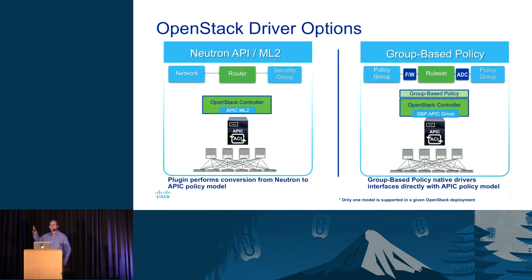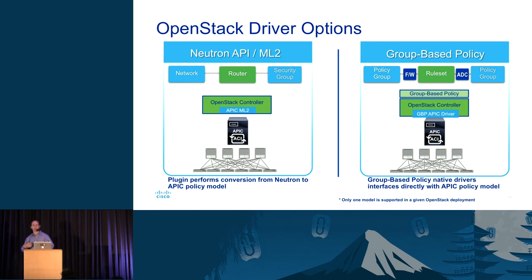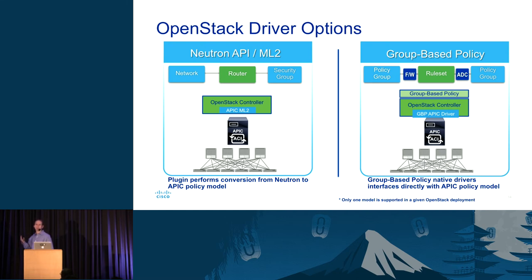We have two different drivers you can use with ACI and OpenStack. One is a regular Neutron mechanism driver for ML2, which allows us to consume the Neutron API, convert that into ACI policy, and use it to build up a capability inside ACI and APIC on the network. Many of our customers are using this approach today. We also have customers that have chosen to use group-based policy, which gives them the application-centric view directly as a native OpenStack API. This allows them to build application profiles directly inside OpenStack through Horizon or CLI, and then drive those through APIC to the underlying infrastructure.